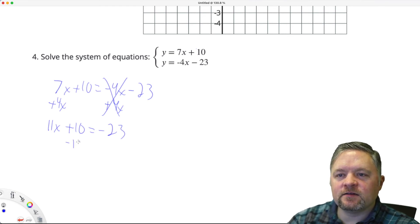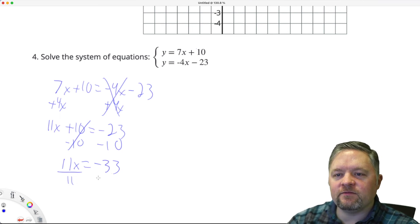Subtract 10. Subtract 10. Those will cancel. 11X equals negative 33. Divide by 11. Divide by 11. X equals negative 3.